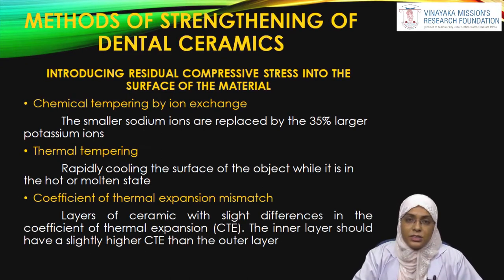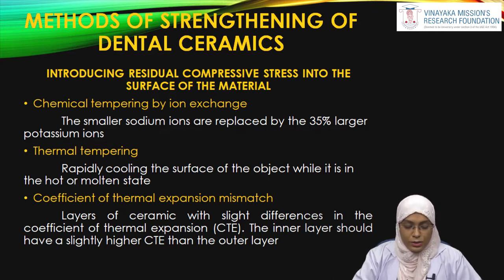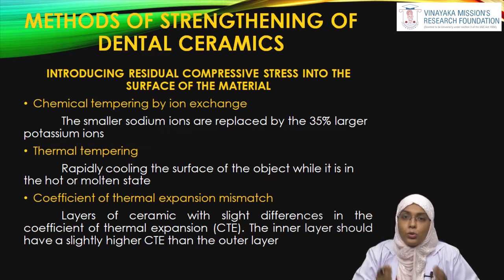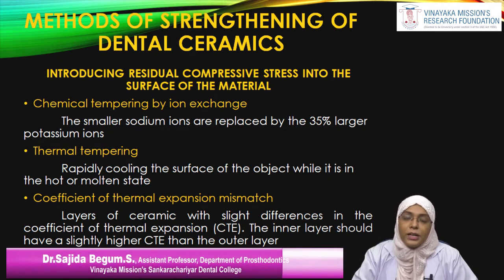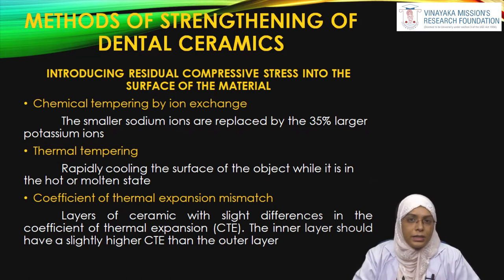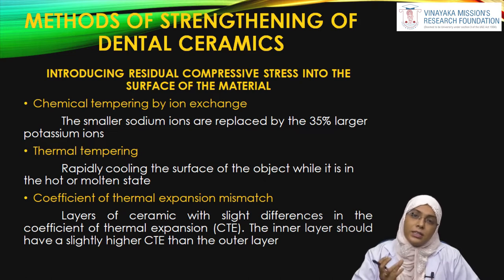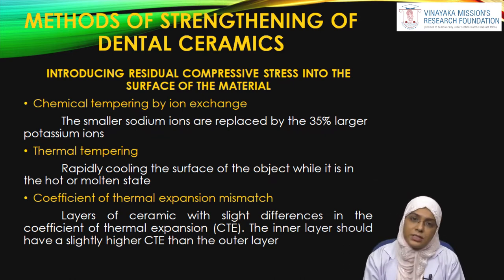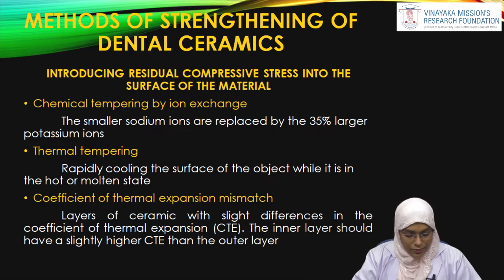The second method to increase compressive stress is thermal tempering. In thermal tempering, we rapidly cool the surface of the object when it is very hot or in the molten state. The outer layer cools much faster compared to the inner core layer, which remains more molten and hot. When immersed in water, the outer layer cools rapidly without stress, but the inner core layer, cooling much slower, introduces a compressive stress within the material.